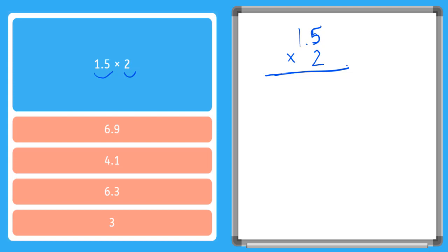So 2 times 5, that's 10. I carry my 1. 2 times 1, that's 2. I add my carried, that's 3. So now I've done my multiplication as if this is just whole numbers, like 15 times 2.